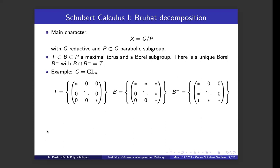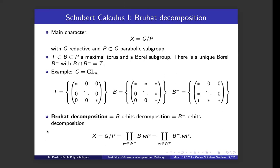The basic example is GLN. The Borel subgroup is given by upper triangular matrices, the maximal torus by diagonal matrices, and the opposite Borel subgroup by lower triangular matrices. Once you have such subgroups, you can look at the Borel decomposition — the decomposition in terms of B-orbits or opposite B-orbits. These two are conjugates, so they are the same up to conjugation. You get a disjoint union of finitely many B-orbits, indexed by a nice subset of the Weyl group.